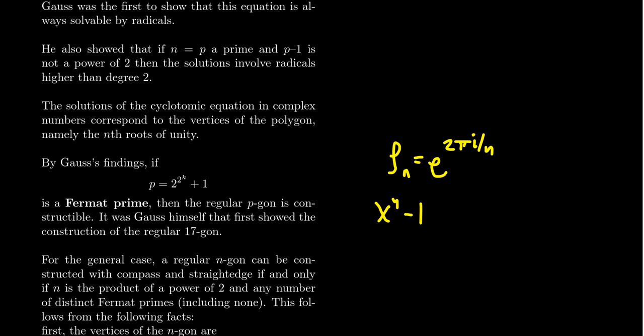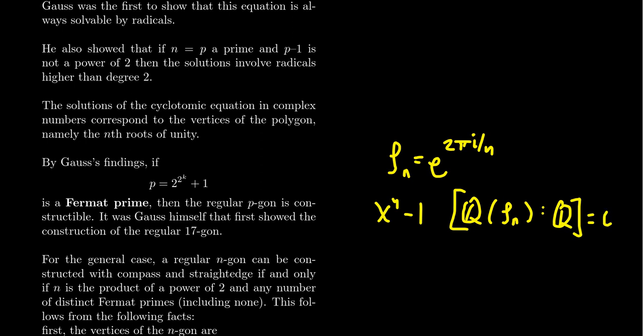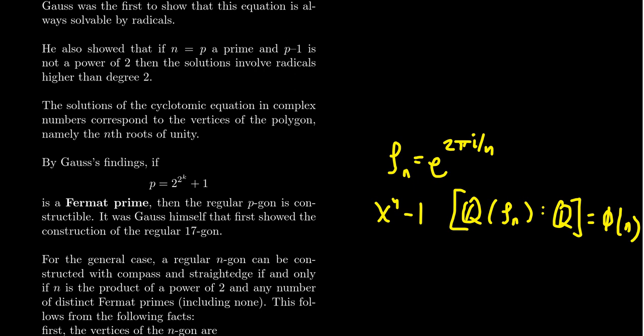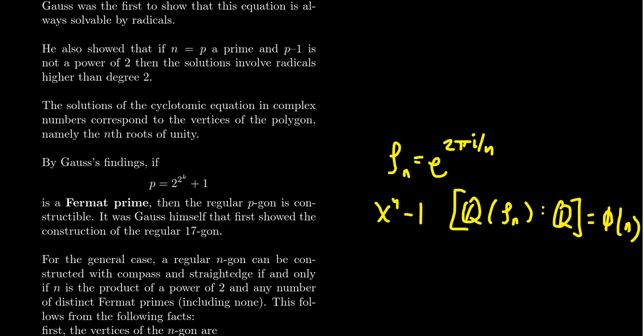This is not the minimal polynomial. That gets more complicated. We'll talk about that some other time. But what one can prove is that if you take Q adjoin a primitive nth root of unity and look at this as a field extension over Q, then this is always equal to phi of n, where phi of n is Euler's totient function. This counts the number of integers less than n which are coprime to n.